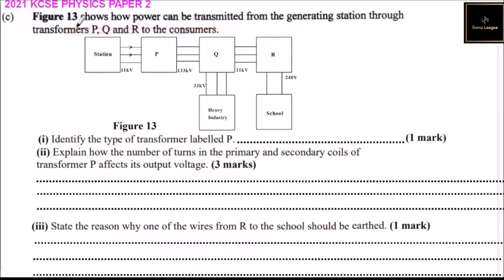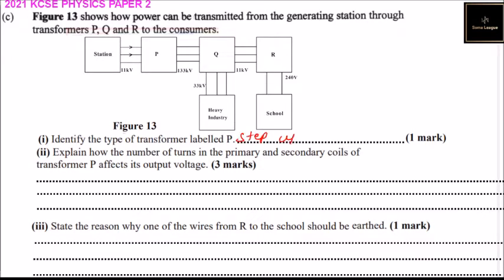Part C: the figure shows how power can be transmitted from a generating station through transformers P, Q, and R to consumers. Number one: identify the type of transformer at P. Transformer P is a step-up transformer that steps up the transmission voltage.